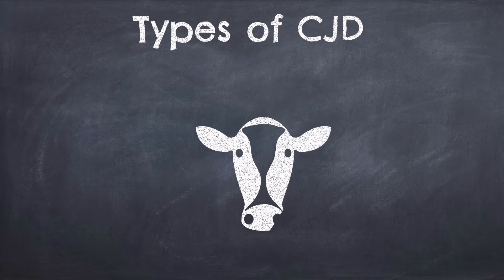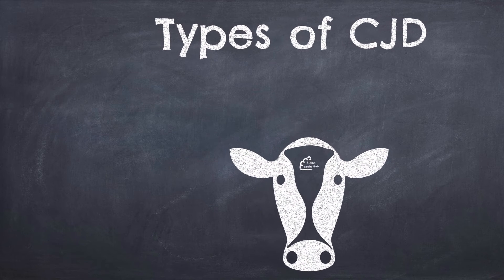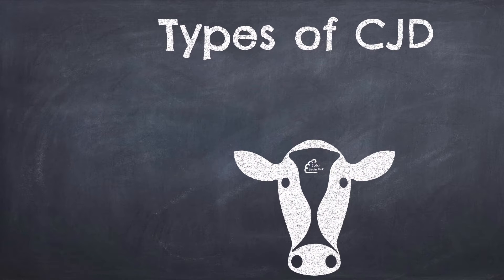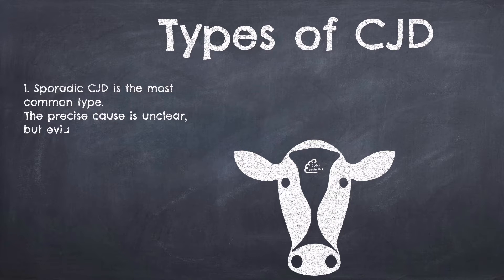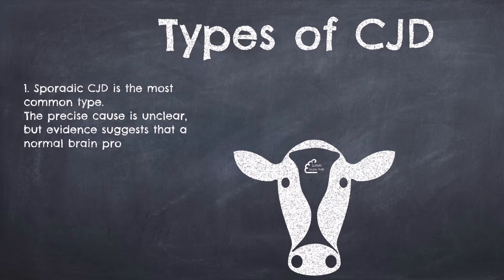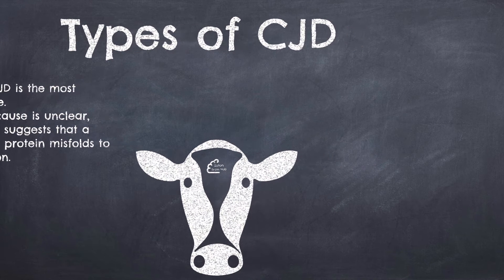So what are the different types of CJD? Sporadic CJD is the most common type. The precise cause is unclear, hence the term sporadic, but evidence suggests that a normal brain protein called a prion misfolds to create an abnormal protein.